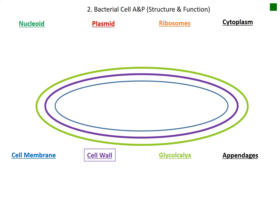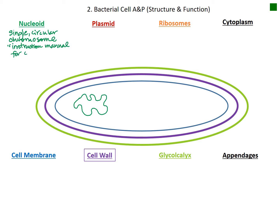We'll talk about eight different structures including the nucleoid, which I will draw in here as a single circular strand of DNA. This is a unique feature — it's not a nucleus, but it is a single circular chromosome in the cytoplasm, and where that is located is what we call the nucleoid. The function of the nucleoid I think of as the instruction manual for the cell.